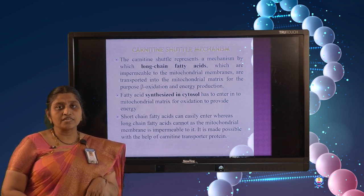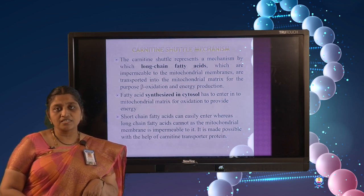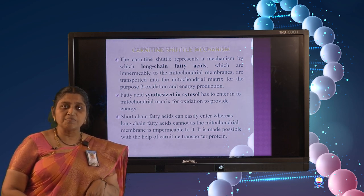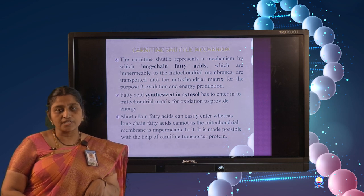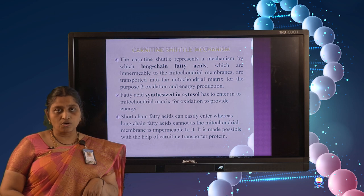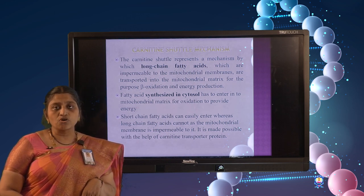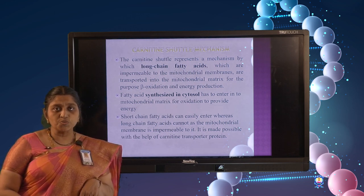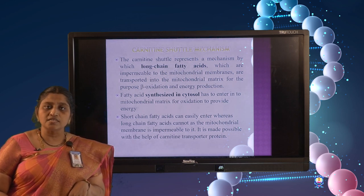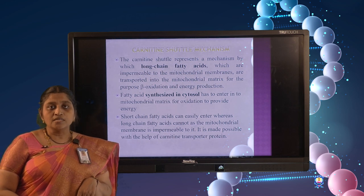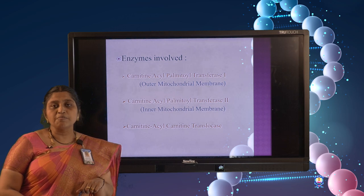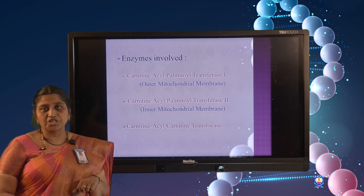Very short chain and medium chain fatty acids do not find any difficulty getting transported across the mitochondrial membrane, and can be easily transported into the matrix and oxidized. The problem arises when the fatty acids are long chain or very long chain — they cannot enter the mitochondrial matrix because the membranes are impermeable to them. This is where the role of the carnitine transporter protein comes in.